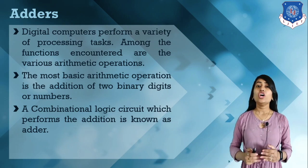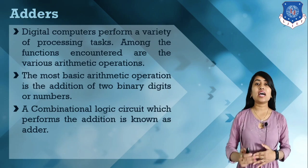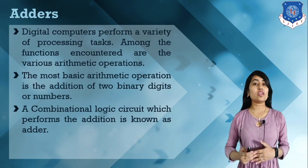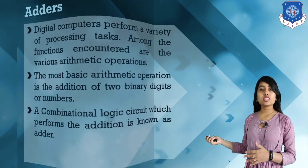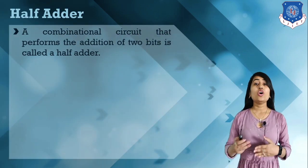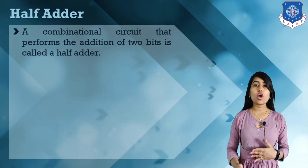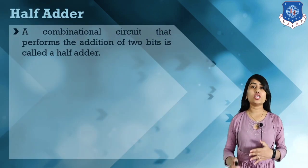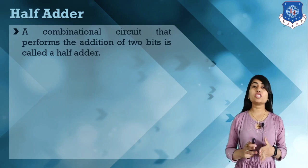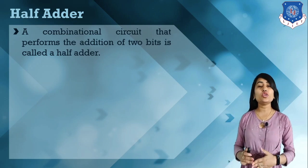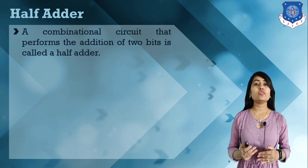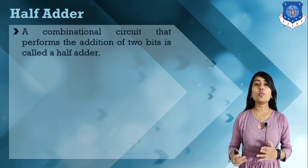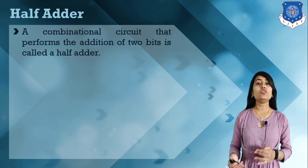We have two types of adder: half adder and full adder. The half adder is basically an adder which performs addition of two bits. Using the half adder we can perform addition of two bits.